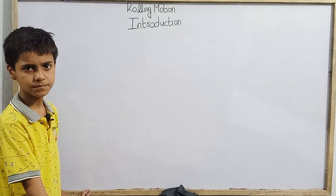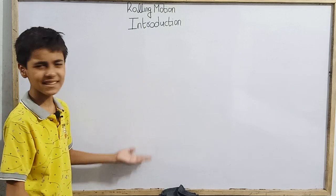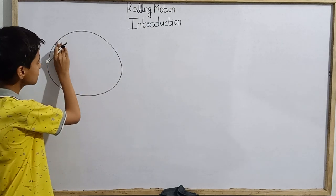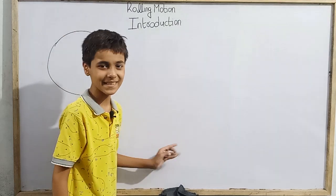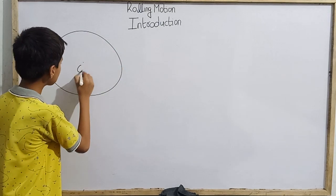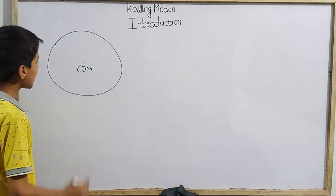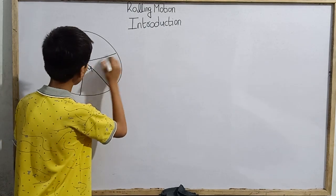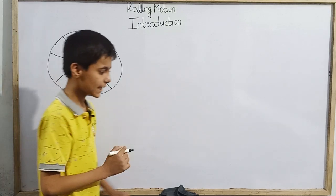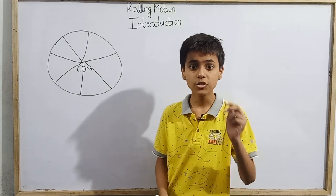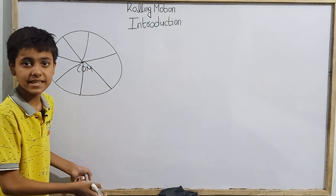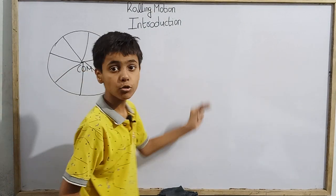Suppose you are standing on the road. Cars, motorcycles, and automobile tires are very common. Here we have a circle representing a tire or wheel with its center of mass marked and spokes drawn. This tire is moving — it is doing translatory motion added with rotational motion. That is rolling motion. It rotates about a fixed axis while also moving forward.